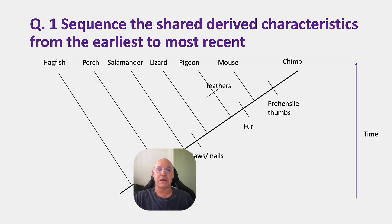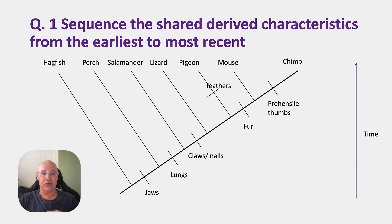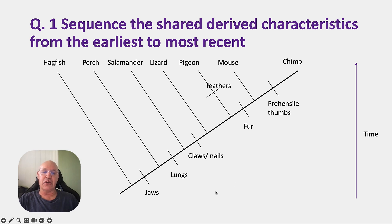Let's look at some practice. Question one: sequence the shared derived characteristics from the earliest to the most recent. Since time goes vertically, the order is simply: jaws, lungs, claws/nails, fur, and prehensile thumbs.